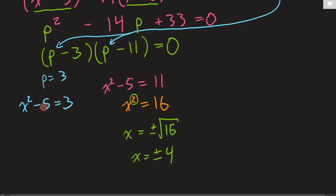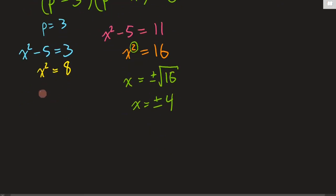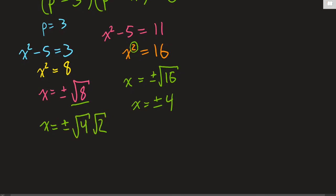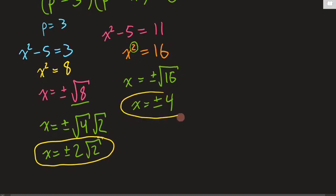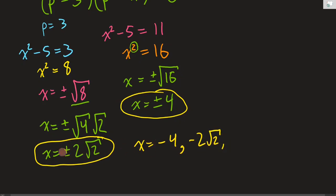For the other factor, from p = 3: x² - 5 = 3. The negative 5 becomes positive 5 on the other side, so x² = 8, which means x = ±√8. We want to keep the exact answer, and we can simplify this radical since there's a perfect square in 8. √4 goes into 8, so this is x = ±2√2. In total, we've got four solutions in order: x = -4, x = -2√2, x = 2√2, and x = 4.